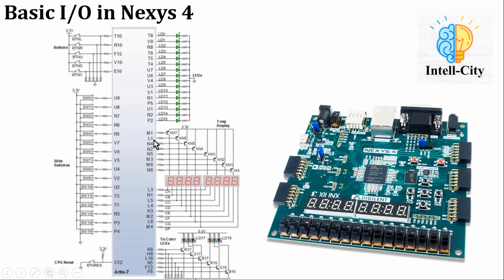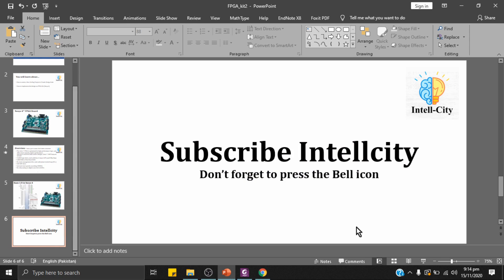Here is a screenshot from the reference manual of the Nexys 4 board. Switch SW0 is connected to pin U9, and SW1 is connected to U8. Switches are also on pins R6, R5, R7, and V7. LED0 is connected to FPGA pin T8, and LED1 is connected to V9. We will use these pin connections in Vivado while designing.